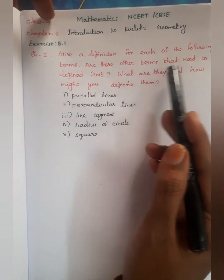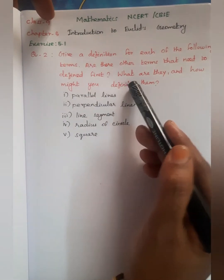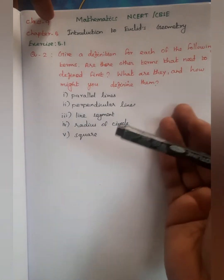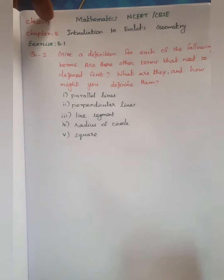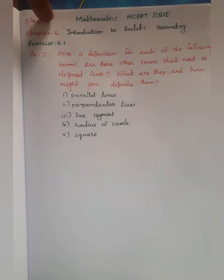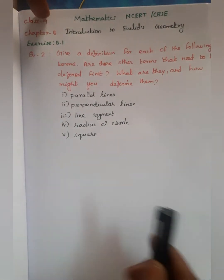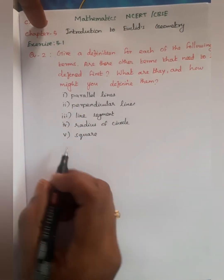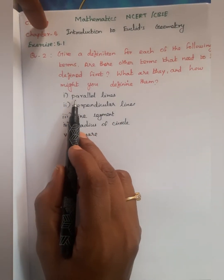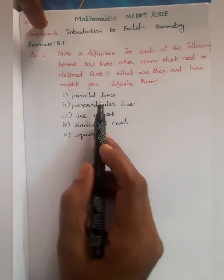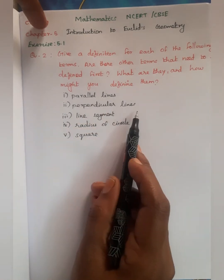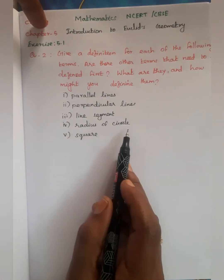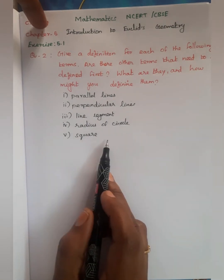Are there other terms that need to be defined first? The terms are defined first — that is how to define. How do you define the following: first, parallel lines; second, perpendicular lines; third, line segment; fourth, radius of circle; fifth, square.